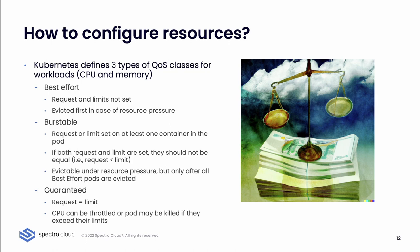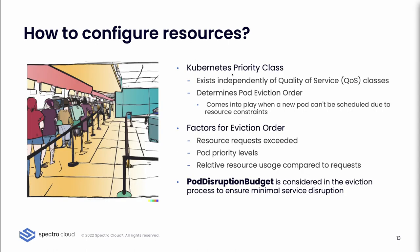Burstable means that the request or limit is set on at least one container in the pod, and if both requests and limits are set, they should not be equal — the limit should be greater than the request. When request equals limit, this is the Guaranteed class. Kubernetes also introduces the notion of Priority Class, which exists independently of QoS classes and determines pod eviction order, coming into play when a new pod can't be scheduled due to resource constraints. Both mechanisms work together to provide a nuanced way to manage resource allocation and scheduling.